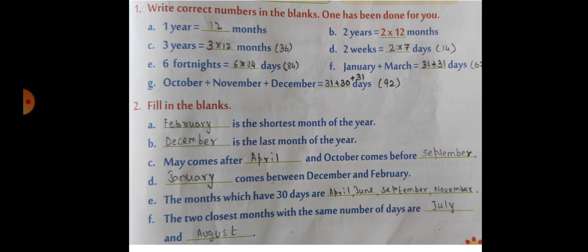The months which have 30 days are April, June, September, November. The two closest months with the same number of days are July and August. Children, this video is entirely on just checking with the answers.